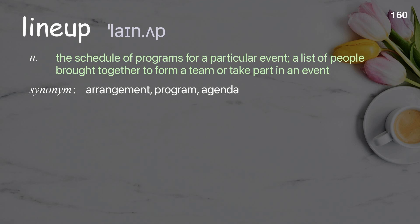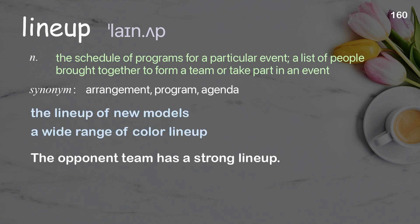Lineup: the schedule of programs for a particular event; a list of people brought together to form a team or take part in an event. Examples: the lineup of new models, a wide range of color lineup. The opponent team has a strong lineup.